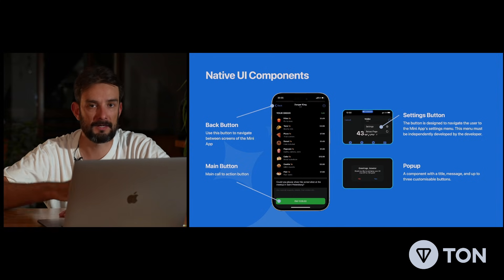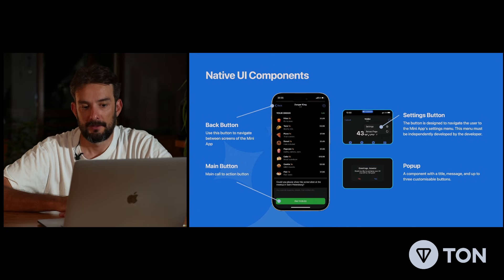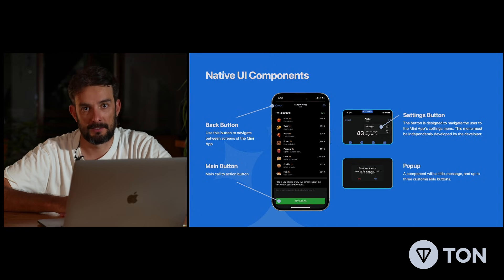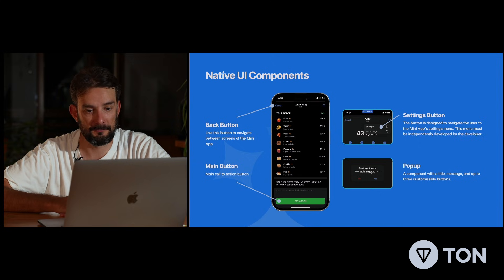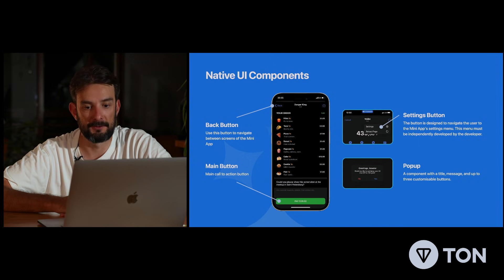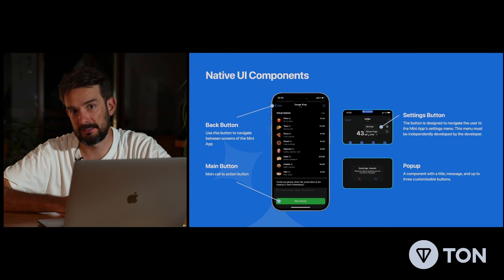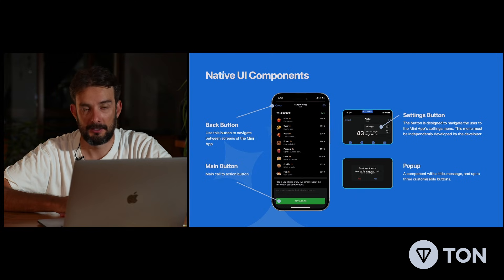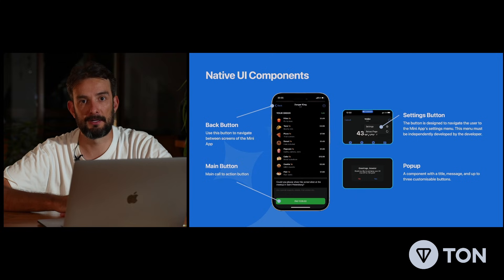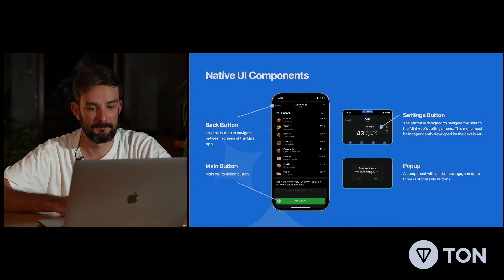Then we have the settings button. With the settings button, we can add some items to the list in this menu. For example, if you have a settings screen in your app, you can provide a link there in a convenient way for the user.